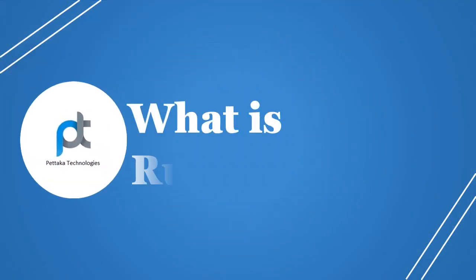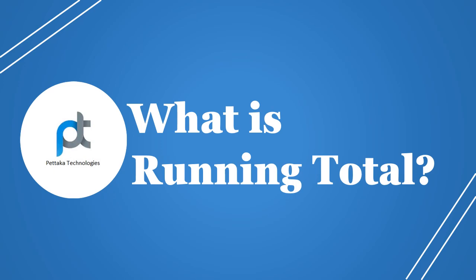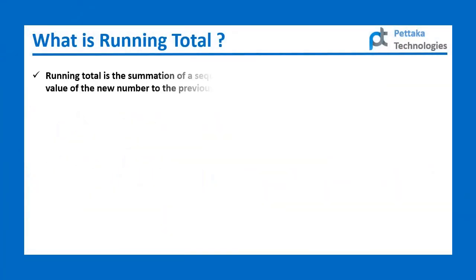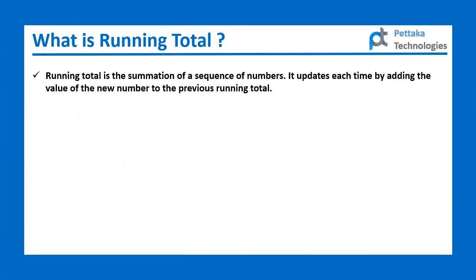What is running total? Running total is the summation of a sequence of numbers. It updates each time by adding the value of the new number to the previous running total. We will see some examples.